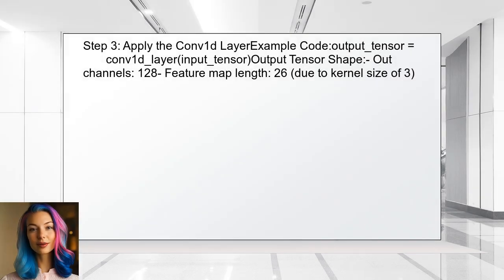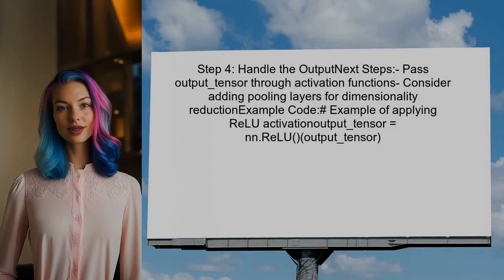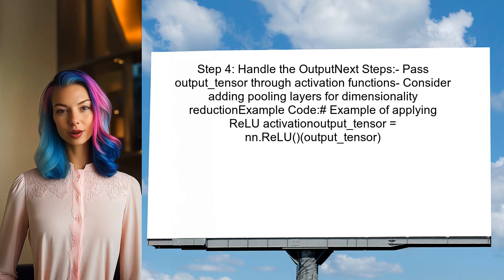Now, apply the Conv1D layer to the input tensor. This will produce an output tensor that contains the feature maps generated by the convolution operation. Finally, ensure that you understand how to handle the output. The output tensor can be passed through additional layers for further processing, such as activation functions or pooling layers.